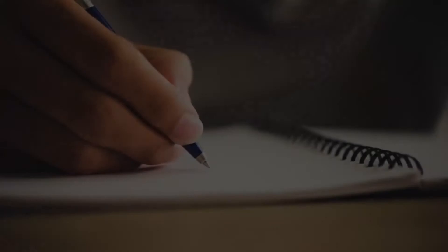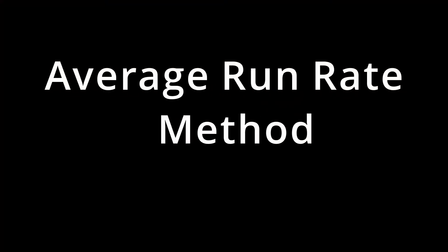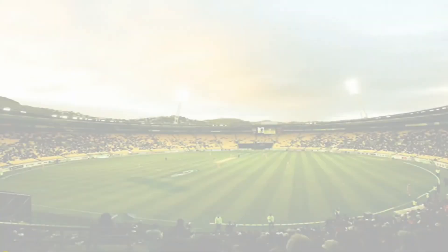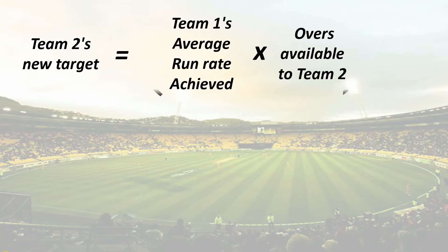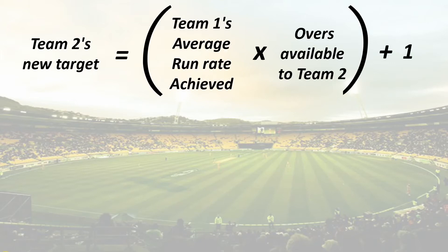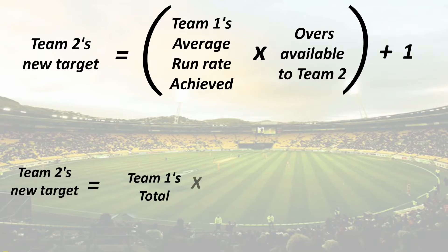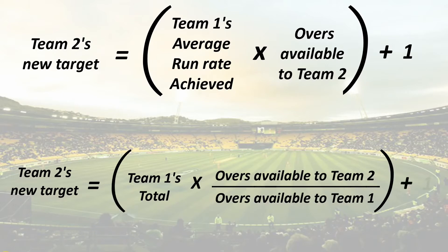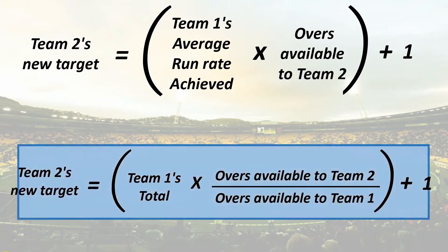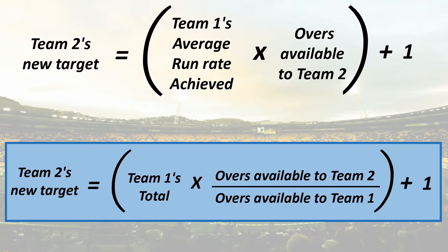Various different methods have been used previously. The first commonly used method is the Average Run Rate method, or the ARR method. This method sets team 2's new target as team 1's average run rate multiplied by overs available to team 2, plus 1. This can also be expressed as: team 2's new target equals team 1's total multiplied by overs available to team 2, divided by overs available to team 1, plus 1. This method only considers the run rate of team 1.